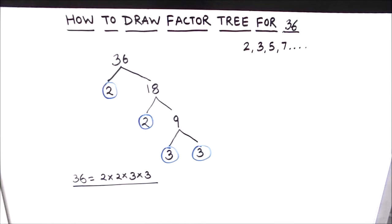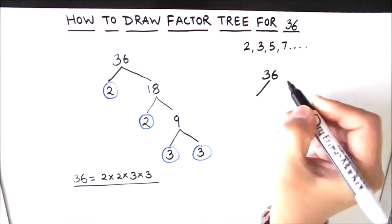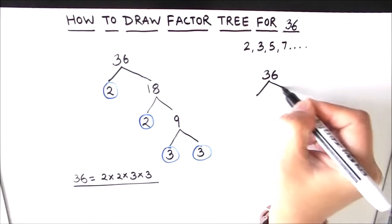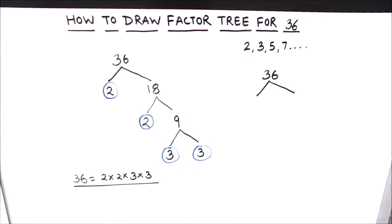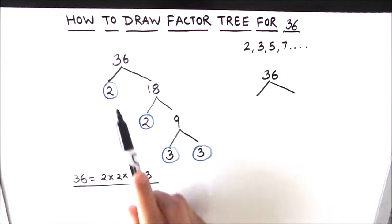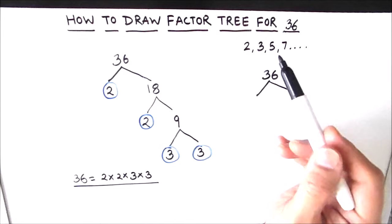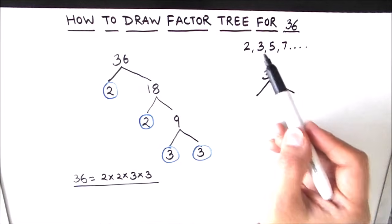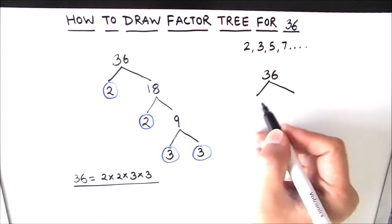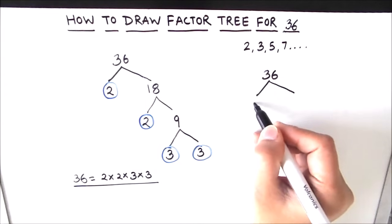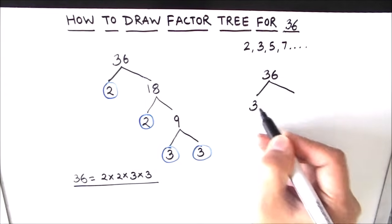We can draw more than one factor tree for the same number, so let's make one more factor tree for number 36. We'll write 36 and make two branches, but instead of taking 2 as one of the factors, we are going to take the next prime number, 3, and check whether 36 is divisible by 3.